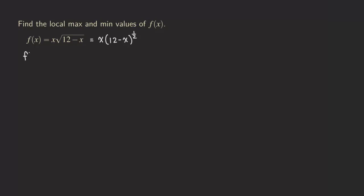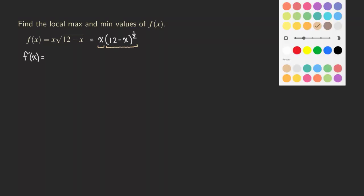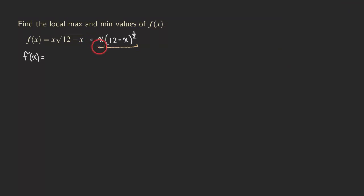Taking the derivative, we are going to use the product rule here. As you can see, the x is one function, and the 12 minus x raised to the one-half power is the other function. So we are going to take the derivative of x, which gives us 1, and then we copy the second function.